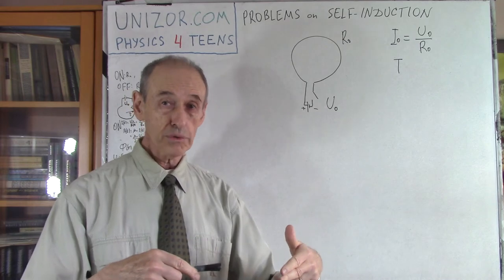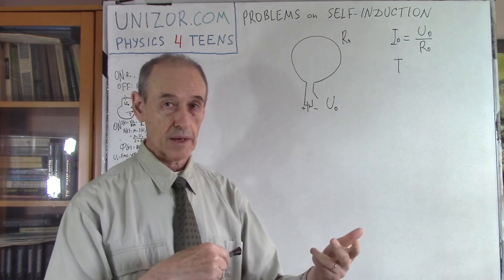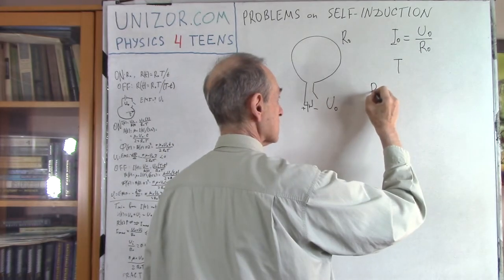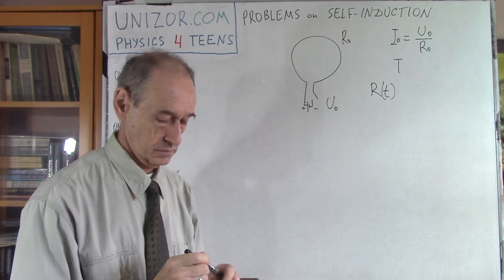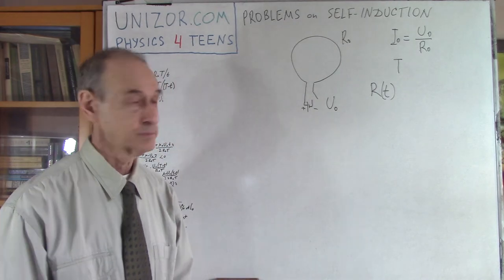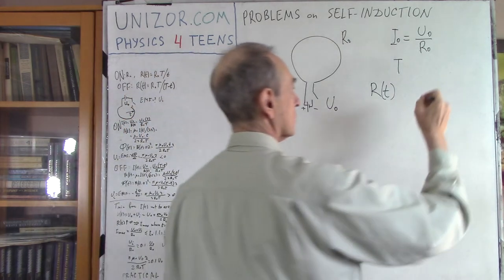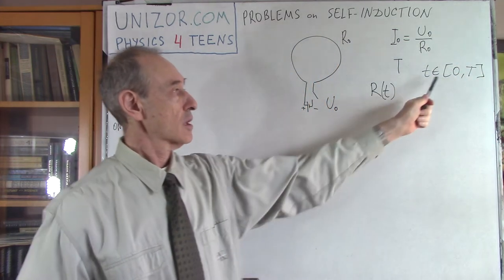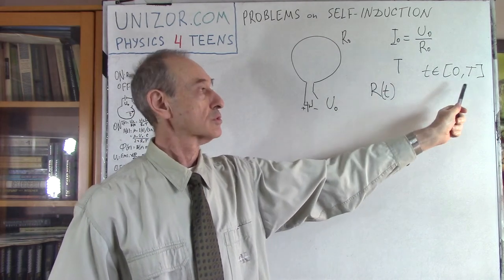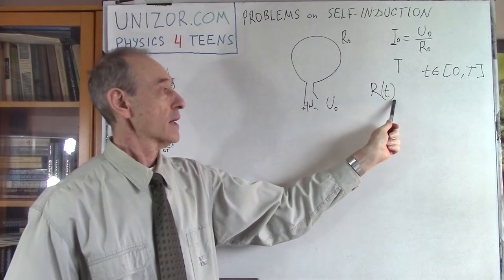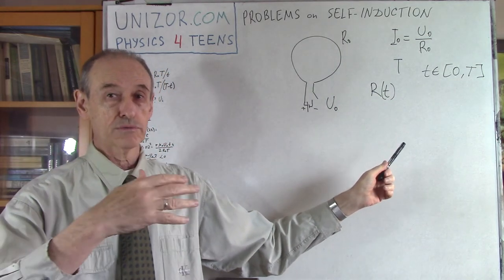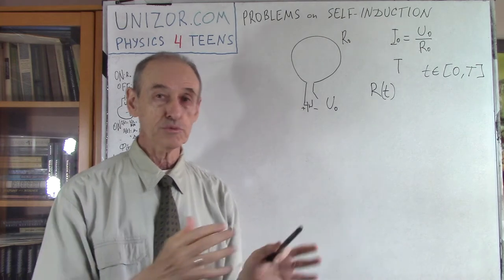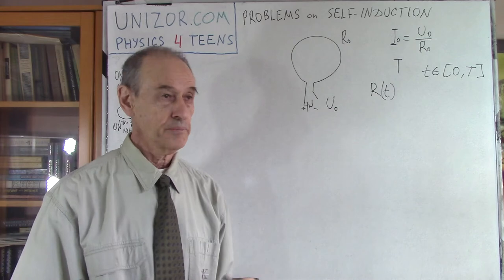Whenever I'm turning the switch off, resistance goes backwards from R0 to infinity. That means resistance is a function of time. Time is changing on the interval from t = 0 to t = T. When switching on, resistance goes from infinity to R0; when switching off, from R0 to infinity. We are trying to put some mathematics into this purely physical world.